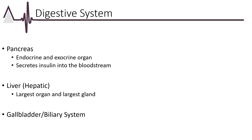There are additional organs vital to the digestive system. The pancreas is both endocrine and exocrine — it secretes the hormone insulin into the bloodstream and digestive enzymes into the duodenum. The liver is the largest organ and gland in the body, with functions including storage of glucose and vitamins, excretion of bilirubin, cholesterol, and drugs, metabolism of carbohydrates, proteins, and fats, and detoxification. The gallbladder stores bile secreted by the liver, which empties into the duodenum.